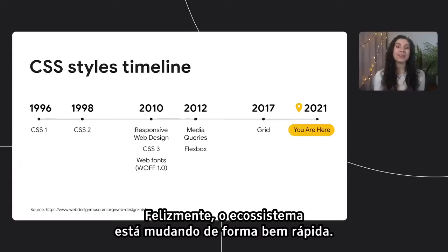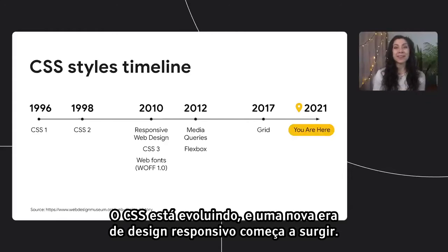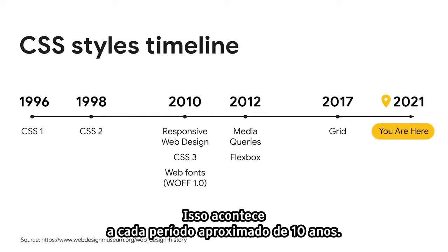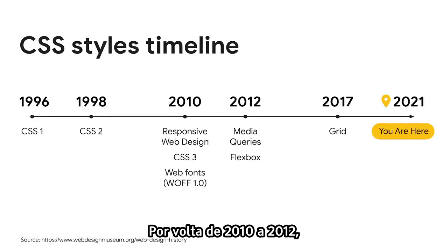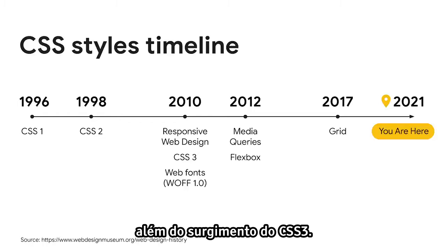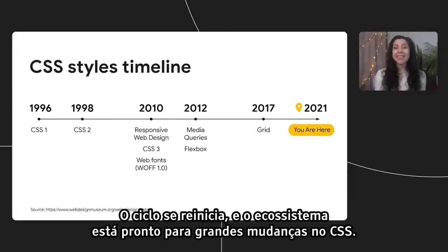The good news is the ecosystem is changing, and it's changing pretty rapidly. CSS is evolving, and a new era of responsive design is right on the horizon. We see this happen about every 10 years. Around 2010 to 2012, we saw a huge change with mobile and responsive design and the emergence of CSS3. So yet again, the ecosystem is ready for some pretty big changes to happen to CSS.